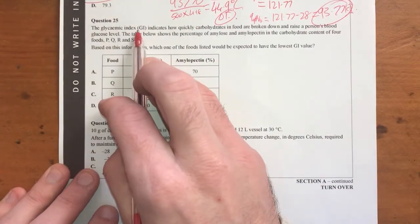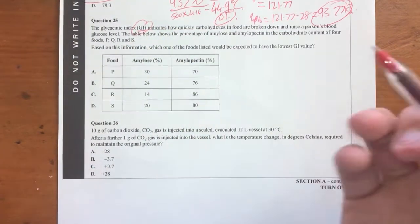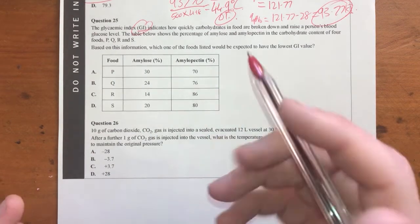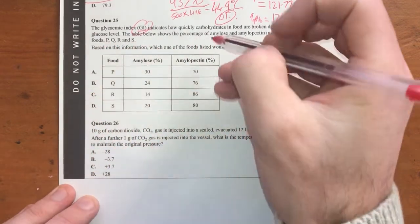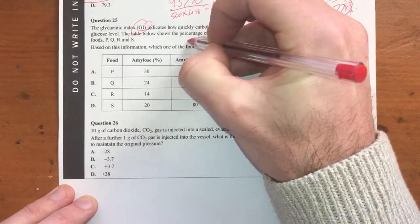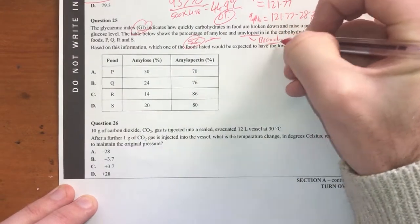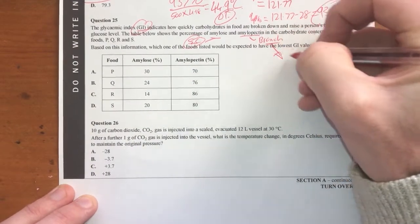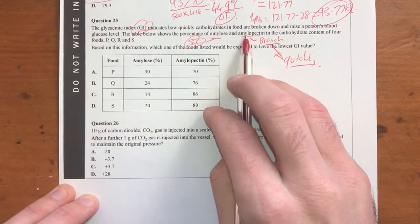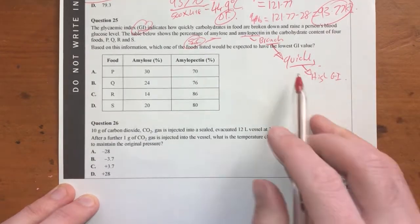The glycemic index indicates how quickly carbohydrates in food are breaking down. So GI, a low GI means they're broken down slowly. A high GI means they're broken down quickly. The table below shows a percentage of amylose and amylopectin. Amylose is a straight chain carbohydrate and amylopectin is branched. So therefore, branch breaks down quickly. So therefore, anything with lots of amylopectin is going to break down quickly, which leads to a high GI.